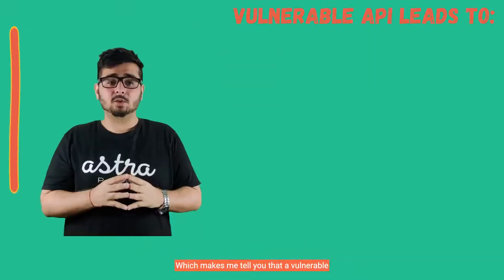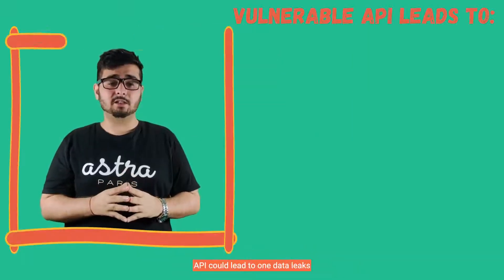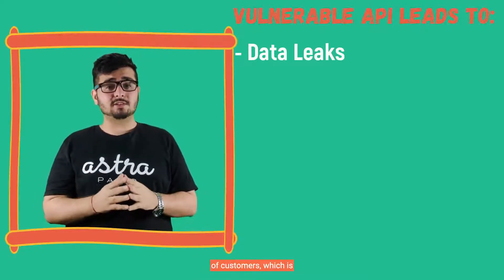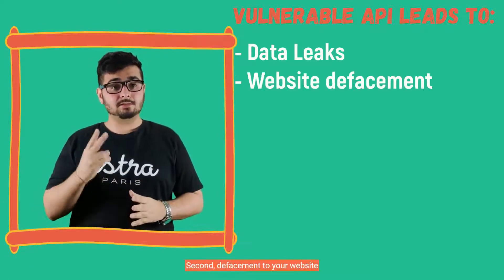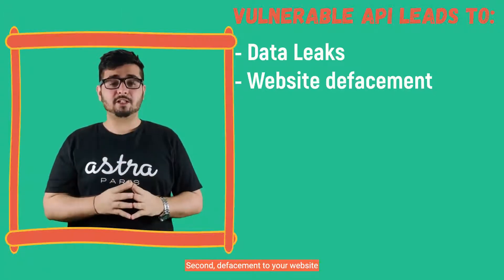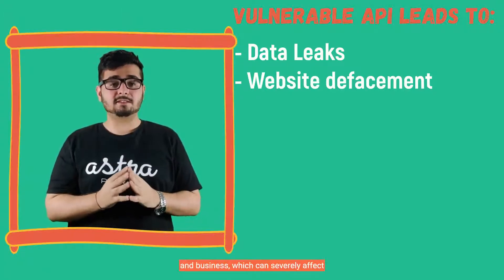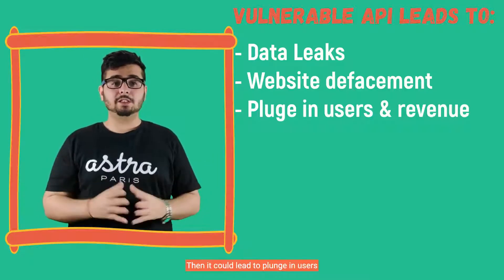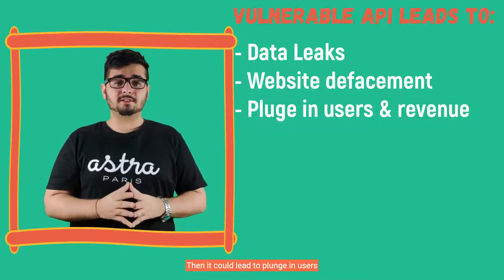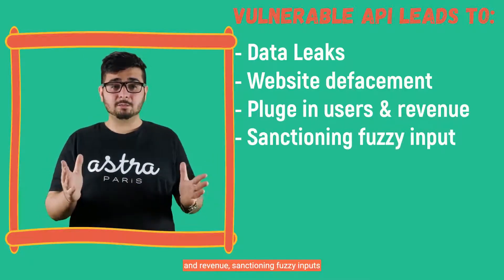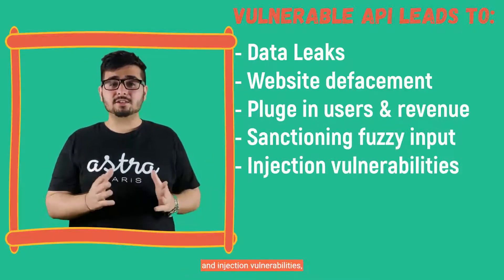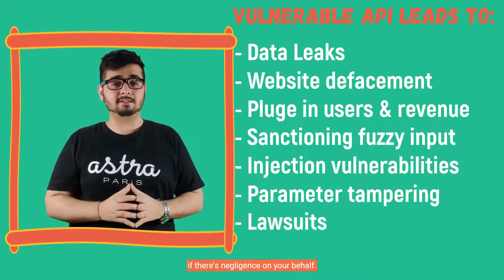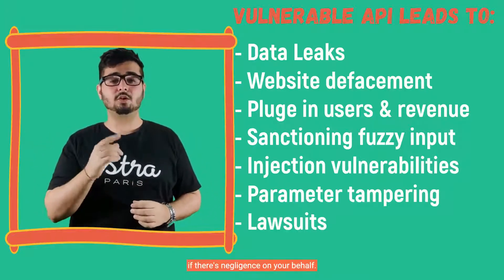A vulnerable API could lead to: 1. Data leaks of customers which is later sold in the black market. 2. Defacement to your website and business which can severely affect your brand's reputation in the market. 3. Plunge in users and revenue, injection vulnerabilities, parameter tampering, and even lawsuits if there's negligence on your behalf.